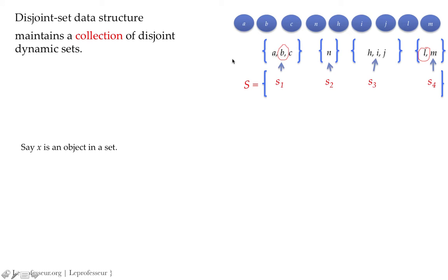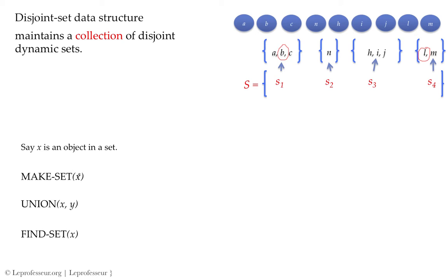Let's say x is an object in a set. We need at least a few operations: make_set, which makes a set containing object x; find_set, which tells us which set object x belongs to; and union, which is the merging operation that merges two sets together when there is a common item or relationship — for example, when x and y become friends.